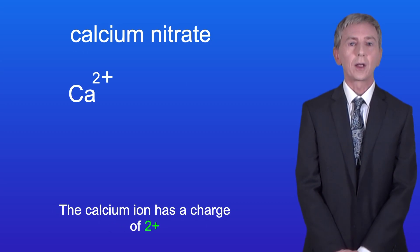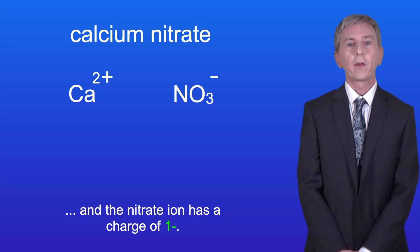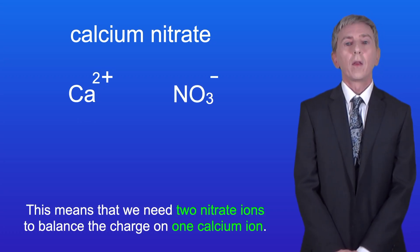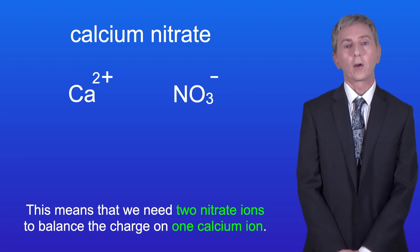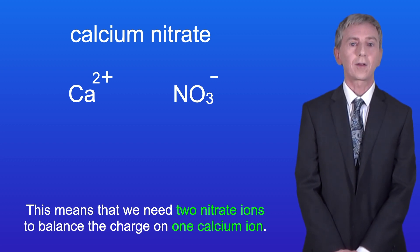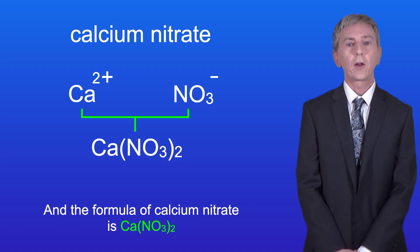Okay, the calcium ion has a charge of 2+ and the nitrate ion has a charge of 1-. This means that we need two nitrate ions to balance the charge on one calcium ion. And the formula of calcium nitrate is Ca(NO3)2.